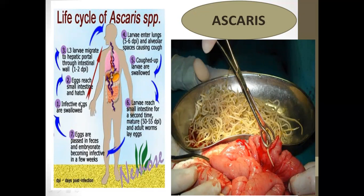To prevent ascariasis, we should keep food items properly covered, wash raw vegetables and fruits thoroughly, use clean water, and control house flies, which spread the eggs.